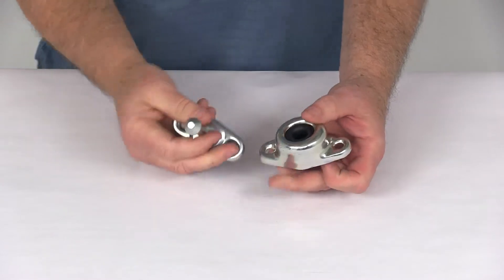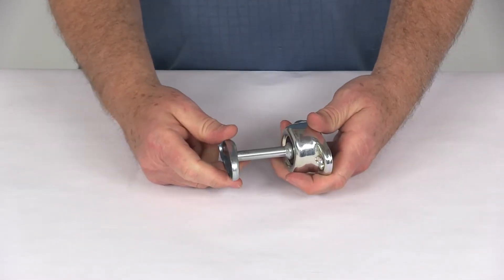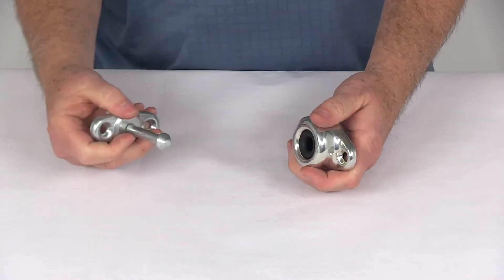So basically with these installed, when you open your door, it'll insert right into that rubber bushing and hold it open. Then you just pull the door and it'll remove from there.